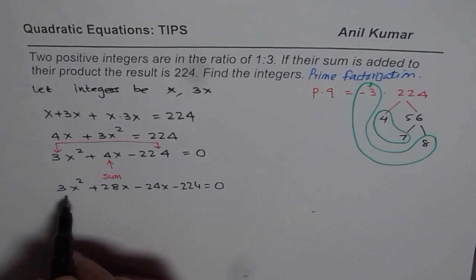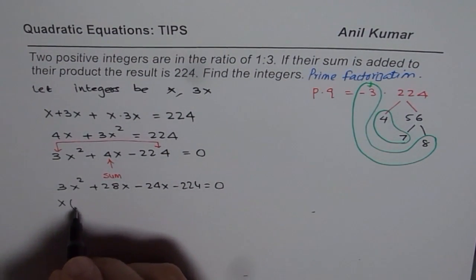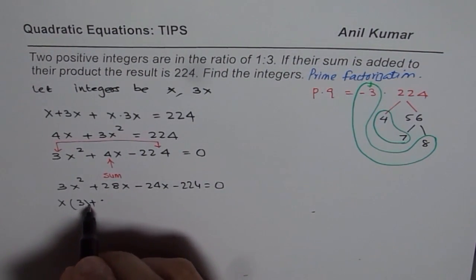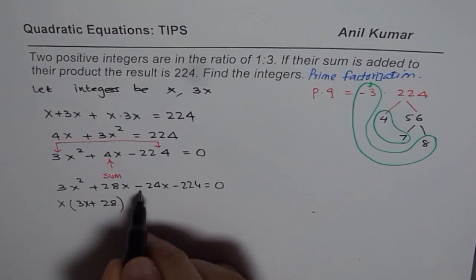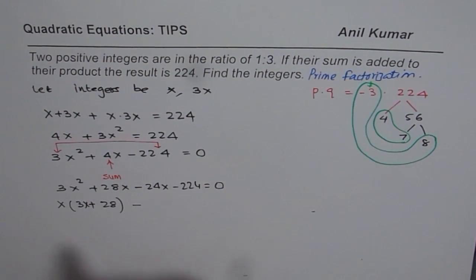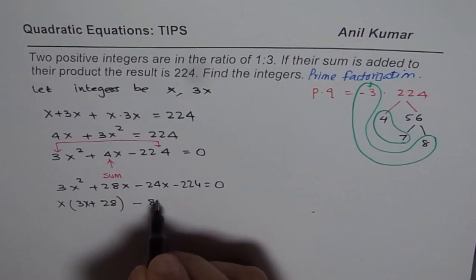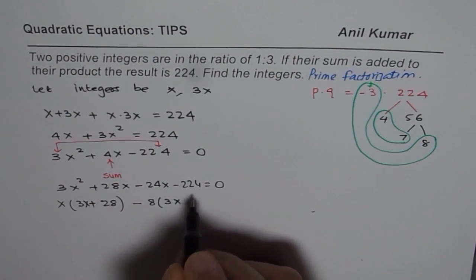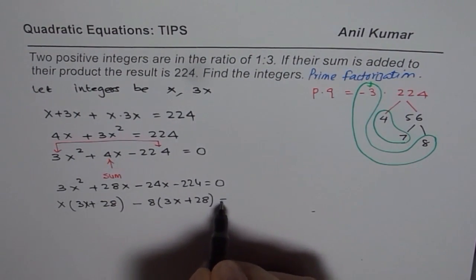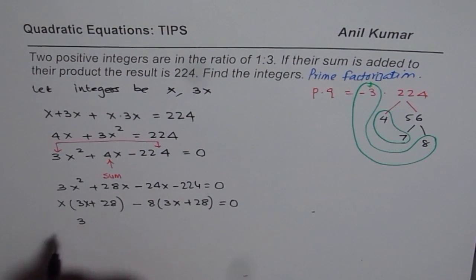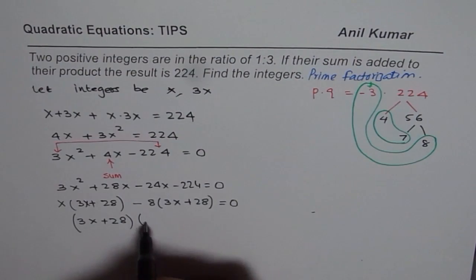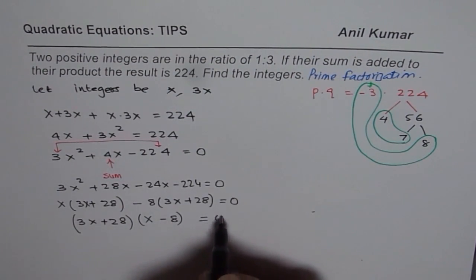Now we can continue with our factoring. We have x common here. So we have 3x plus 28. Here we will get 8 common, minus 8, and then these are the numbers which comes here. We need 3x. So minus 8 common. So 3x and 8 when you divide into this, we get plus 28 equals to 0. So now we can factor 3x plus 28 and we get x minus 8 equals to 0.